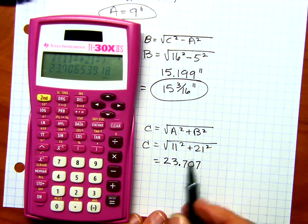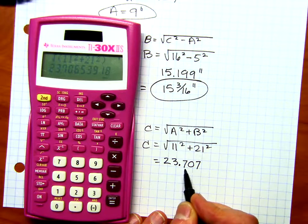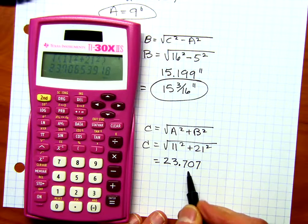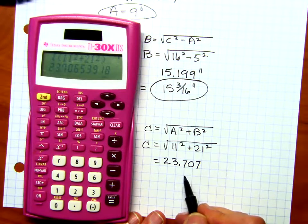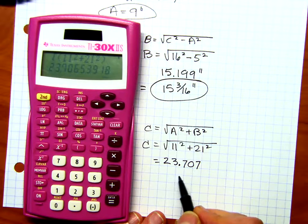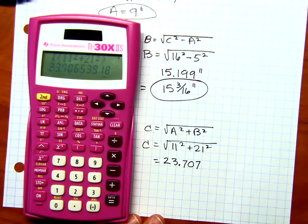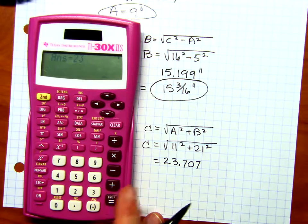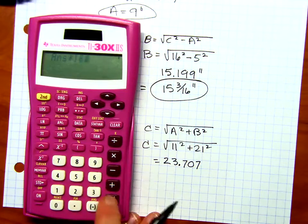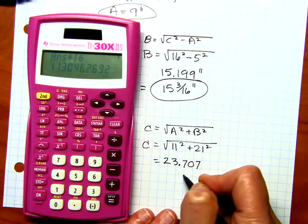23.7065. So that's going to bump that 6 to a 7. So 23.707. Now, we're going to go ahead and convert that to the nearest 16th. And I'm going to do a little estimation. It looks like it's going to be more than a half, but a little less than 3 quarters. So hopefully we get that. Let's see. Minus 23 times 16. And that's going to be 11 sixteenths.